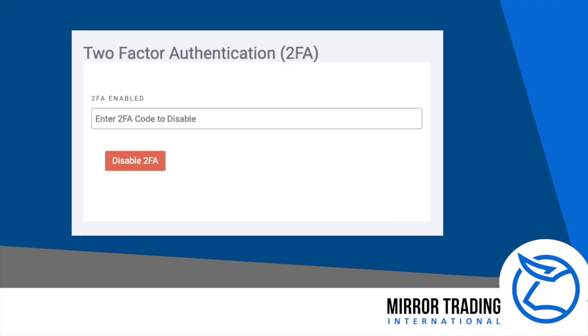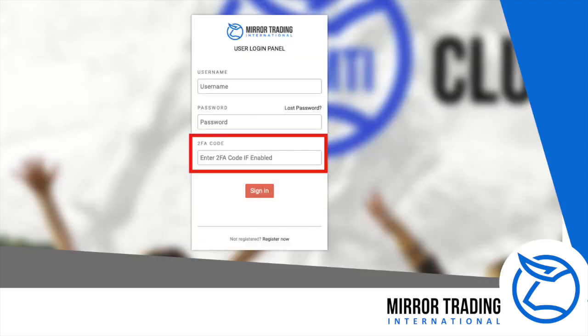When you have enabled the 2FA, a new screen will appear. You can use this screen to disable the 2FA should you wish to in future. The next time you log in, you will need to enter your 2FA code — the one you get from your Google Authenticator app.